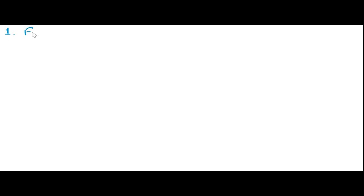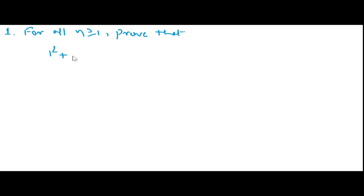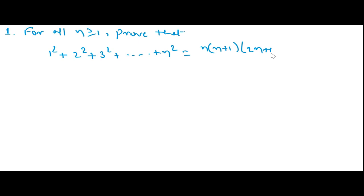What does this problem say? For all n greater than or equal to 1, you need to prove that 1² + 2² + 3² + ... up to n² is equal to n(n+1)(2n+1) divided by 6.